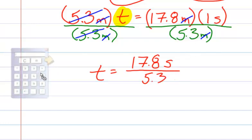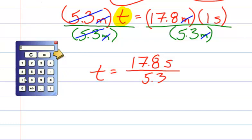So if we grab our calculator, and we take 17.8 divided by 5.3 equals, okay, we're going to end up with time is equal to 3.35. We're going to round that to 3.4. And the only unit that we have left is seconds. So our unit is going to be in seconds.